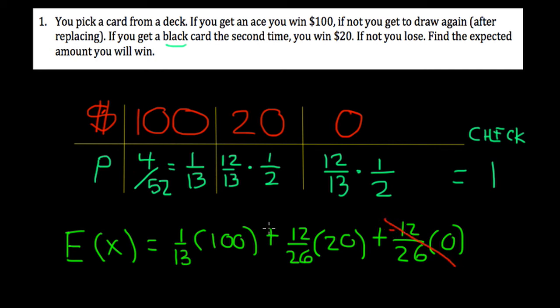And I use my calculator, and you can check my work, but I believe you get $16.92 as your expected winnings playing this game. All right. So that is an expected value problem. It should be relatively quick. It is a multiple choice type question on your test.